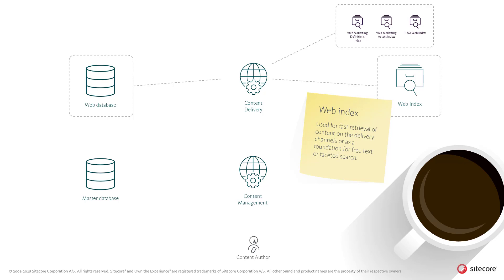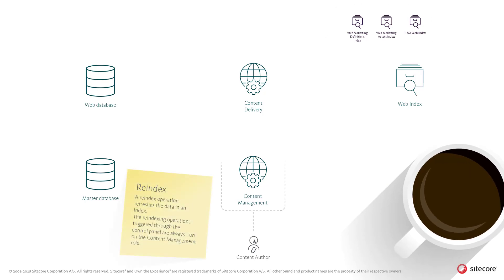The indexing role also maintains specific feature indexes for the Experience Platform, such as for the Federated Experience Manager. As part of the publishing operation, the content delivery role would clear relevant memory caches in order to serve the newly published content to visitors. In some cases, the search indexes for Sitecore need to be refreshed completely — for example after deployments. This re-index operation is triggered through the Sitecore control panel, and the operation is run on the content management role, but it can update both the master and web indexes.